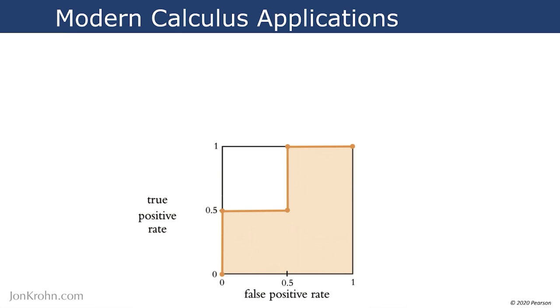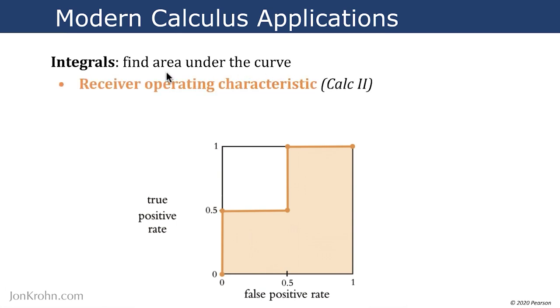And then with respect to that second branch of calculus, the integral branch of calculus, where we're trying to find the area under a curve, this is useful in machine learning, for example, to calculate a metric called the receiver operating characteristic.